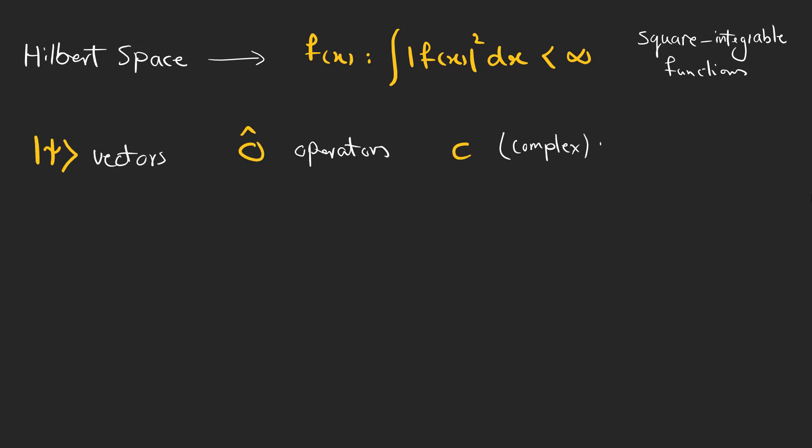So let's recap. Hilbert space is a kind of vector space, which consists of all the square integrable functions. In this space, we deal with vectors, operators, and complex numbers. Operators can act on these vectors, and the inner product of two vectors give a complex number.